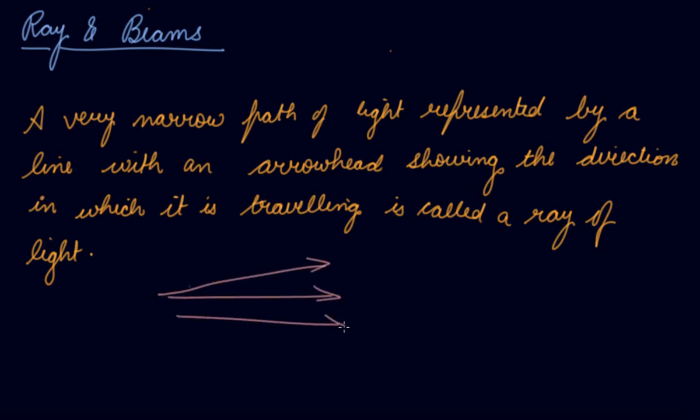Now these are the single single lines are the rays. If I talk about a beam of light is broader and consists of several rays. Now this is the beam of light whereas this single one is a ray. So a beam of light is broader and consists of several rays.